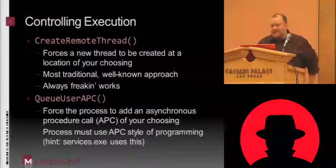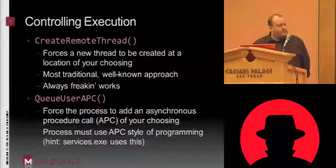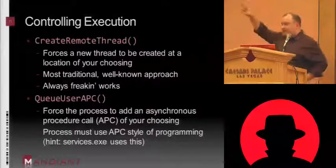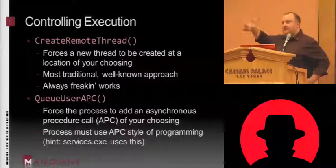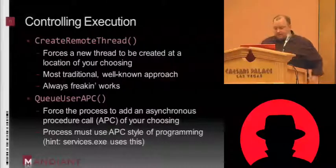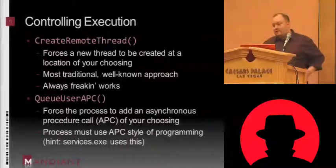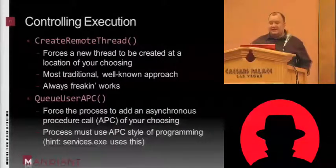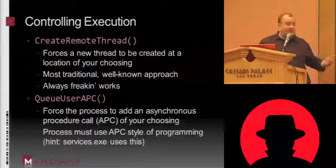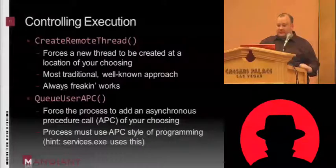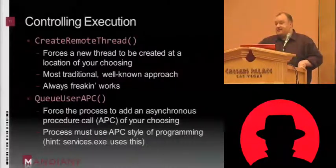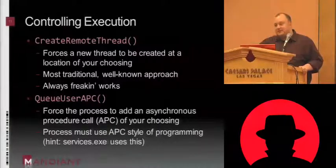Other techniques like QueueUserAPC — there's not much documentation out there on them; they're not very popular. QueueUserAPC will force a process that supports APC — asynchronous procedure calls — which is basically a queue of functions that process is going to execute whenever it works on the APC mechanism. Not all processes do. There are some key processes that do use APC — for example, services.exe uses asynchronous procedure calls. So you can use QueueUserAPC to force services.exe to execute something of your choosing. It wouldn't be effective against something like netcat though — it just doesn't use APC, so it's never going to process an APC function added to its queue.